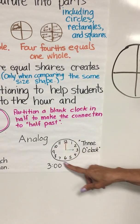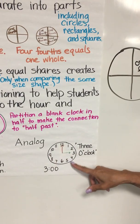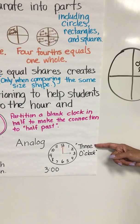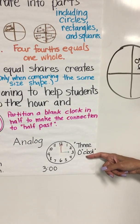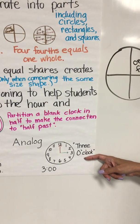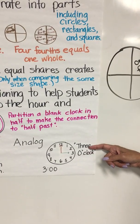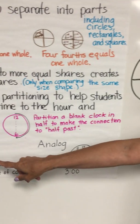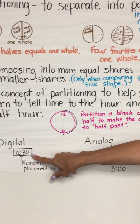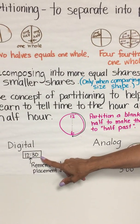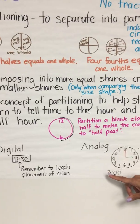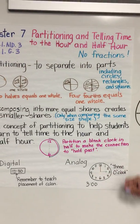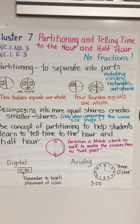Here again is a traditional analog clock, and we are also showing the students how to write three o'clock. There would be three different ways that a student could see this: as the word three o'clock, on an analog clock, or as three o'clock on a digital clock. Again, the language here is very important. We hope you enjoy teaching Cluster 7.